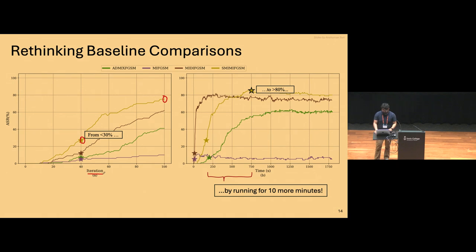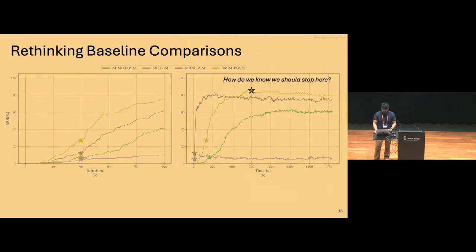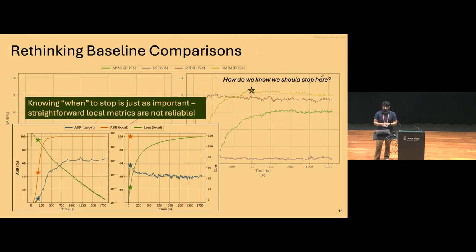But there is one caveat over here, is that in some attacks, like the one in yellow, SMI-MI-FGSM, it doesn't really matter when you stop the attack, as long as you're running it for a sufficiently long amount of time. But you would ideally want to know the optimal stopping point. And currently, if you try to use local loss or the local attack success rate, that doesn't really correlate with the kind of best performance you would get. So there definitely is scope for research in this particular aspect, trying to figure out what the optimal stopping point would be.